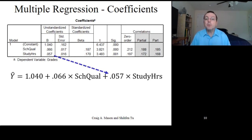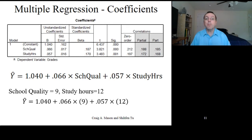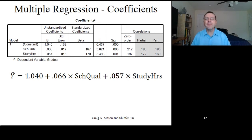This is what we use to predict scores on the outcome based on the participants' values on these predictor variables. For example, if a student attended a school with a quality score of 9, and they studied 12 hours per week, their predicted grades would be 1.040 plus 0.066 times 9, plus 0.057 times 12, or 2.318. Tough school, but again, this is made up data.